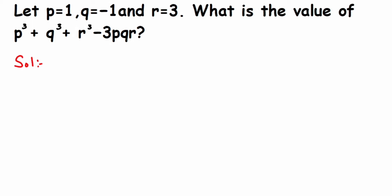Let me write down the given expression here. So it's p³ + q³ + r³ - 3pqr. Now this will be equal to: in place of p we're going to substitute 1, because p equals 1, so this will be 1³.